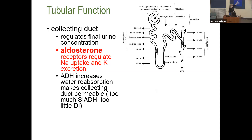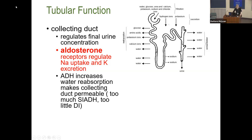At the distal tubule and collecting duct, aldosterone regulates sodium uptake and potassium excretion. In renal failure, potassium and sodium should go in opposite directions — sodium will typically be down because it's dilute in the water, and potassium will typically be up. If sodium and potassium are going in opposite directions without renal failure, that typically tells you there's adrenal insufficiency.